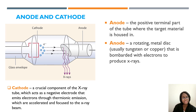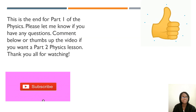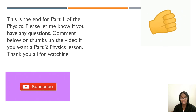Now we have the anode and cathode. The cathode is a crucial component of the x-ray tube, acting as the negative electrode that emits electrons through thermionic emission, which are then accelerated and focused into the x-ray beam. The anode is the positive terminal part of the tube where the target material is housed — it is a rotating metal disc, usually tungsten or copper, that is bombarded with electrons to produce x-rays.